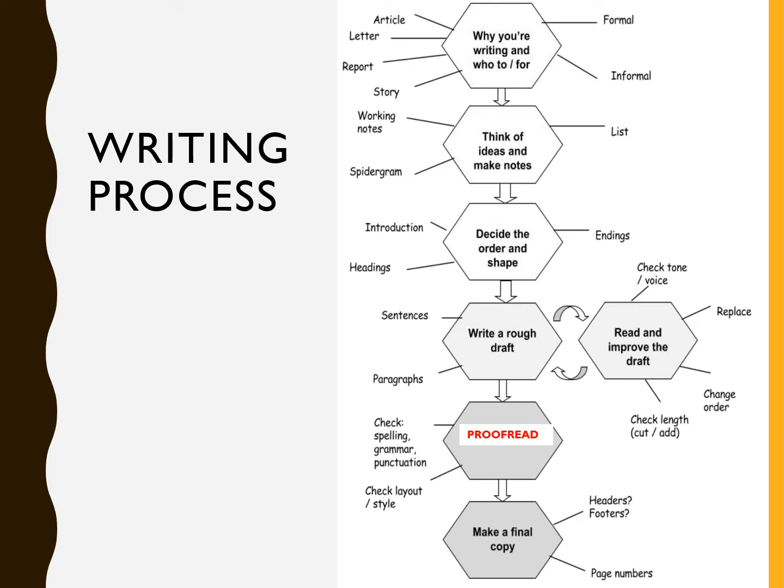Here's a structure of the writing process, and this applies however many words you have to write. First, consider why you are writing and who you are writing to. Think about what kind of writing you are doing, do some planning, decide on the order and shape — introduction, headings, ending — then write, rewrite, and proofread.